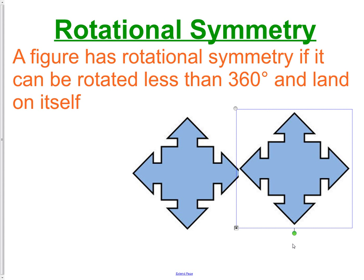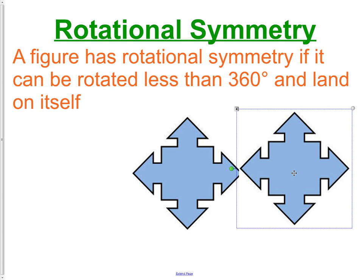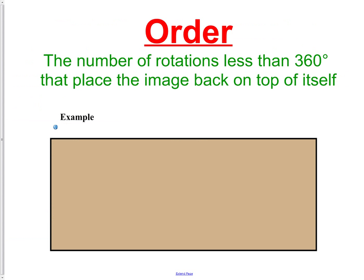We could rotate it again here, and one more time over to here. So that object does have rotational symmetry. Now when we talk about rotational symmetry, there's a couple of words that go along with it. The first is order.